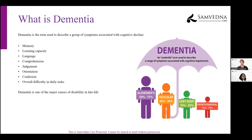We see changes in language. People sometimes struggle to find words — they may use word substitutions. Overall, it might become very difficult for others around that person to understand what they're saying. Sometimes expressive language abilities reduce entirely. These are the different kinds of symptoms we see in dementia.